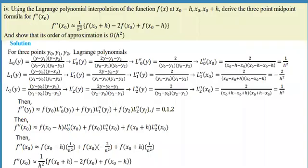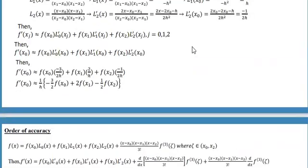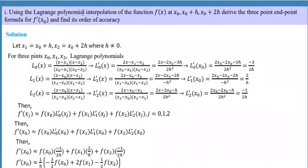In this video we are going to discuss this problem: using the Lagrange polynomial interpolation of f at three points — x₀, x₀+h, and x₀+2h — which is a positive value. We are asked to derive the three-point endpoint formula for f prime evaluated at x₀, and also find its order of accuracy.